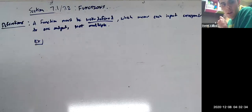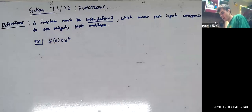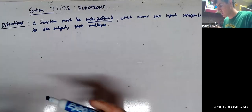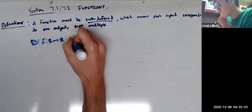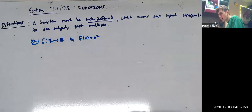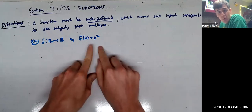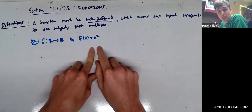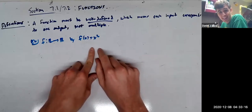So for example, if we look at f of x equals x squared, from the real numbers to the real numbers — any number you plug in, I can tell you what the output is going to be. You give me five, the output's going to be five squared. You give me seven, the output's going to be seven squared. It's going to go to one thing in the output, not multiple.